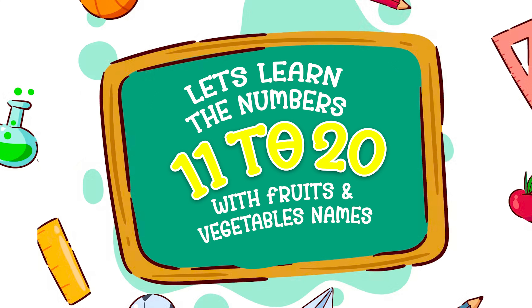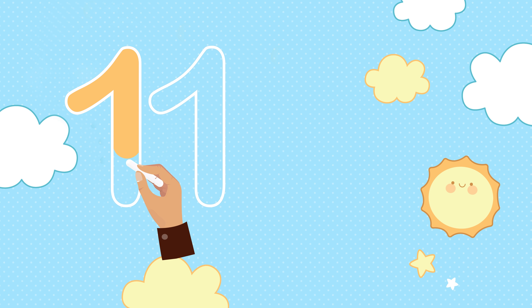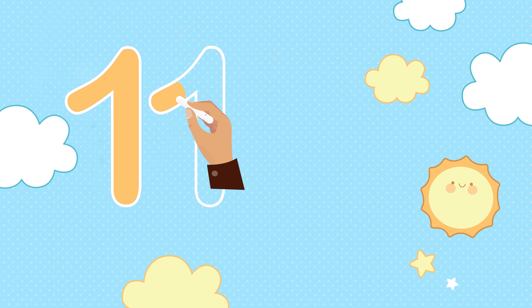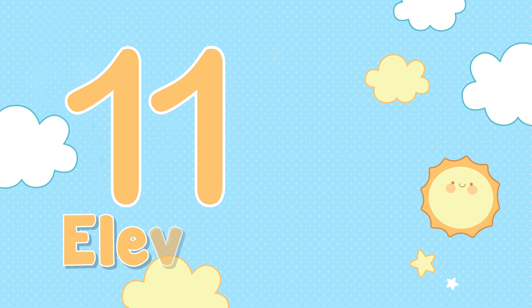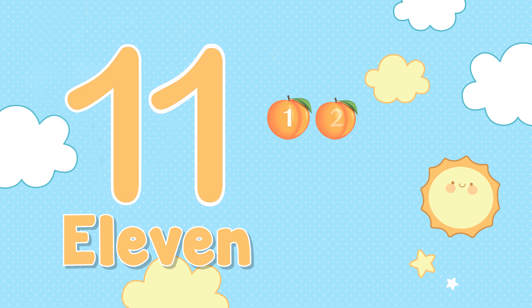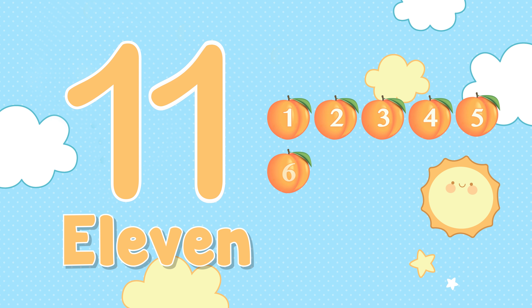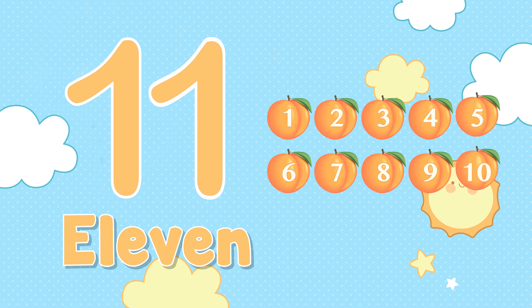Let's learn the numbers 11 to 20. 11 — E, L, E, V, E, N — 11. 1, 2, 3, 4, 5, 6, 7, 8, 9, 10, 11. 11 peaches.